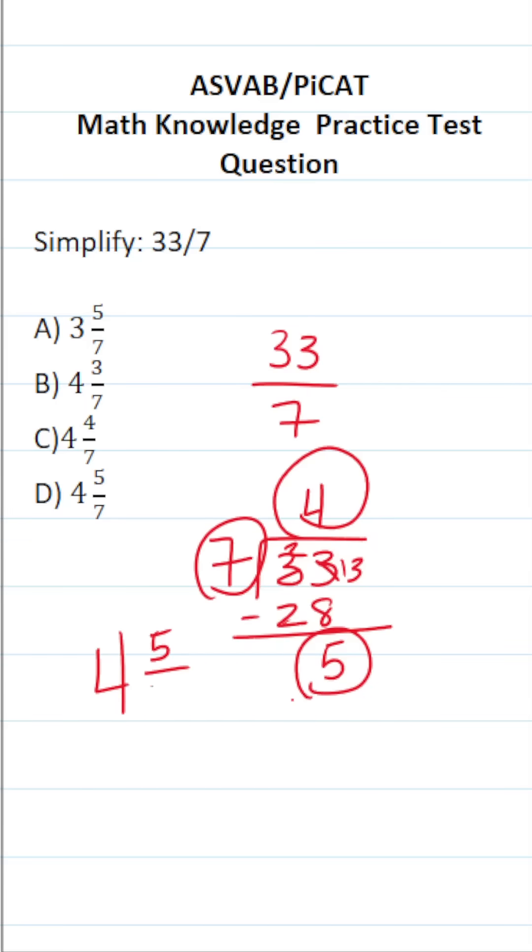And this 7 goes into our denominator. So 33 over 7, which is an improper fraction, as a mixed number is going to be D, 4 and 5 sevenths.